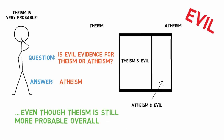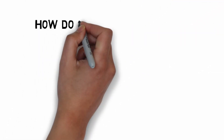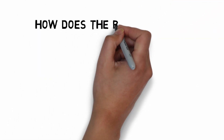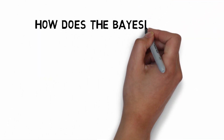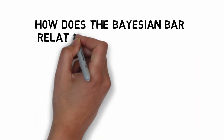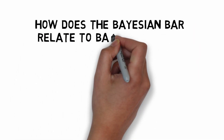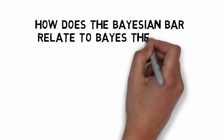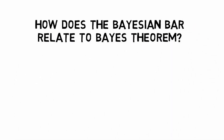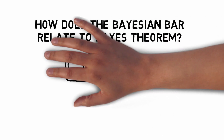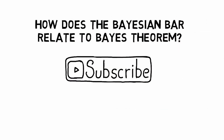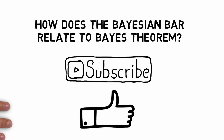So that's how to think about probability visually. In a future video, I'll talk about how the Bayesian bar relates to Bayes' theorem and how the actual formula maps onto this visual bar. So if you don't want to miss out on that, remember to subscribe. And if you've found this video helpful, please give it a like.